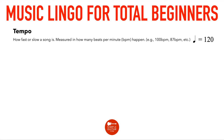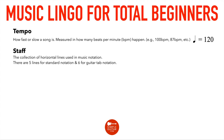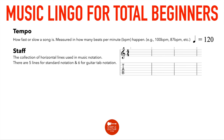Staff: the collection of horizontal lines used in music notation. There are five lines for standard music notation and six for guitar tab notation. The top staff with the treble clef is your standard music notation — five lines, four spaces, each line or space representing a note. The bottom part is a guitar tab staff where the lines represent the strings on the guitar.